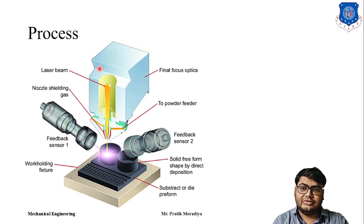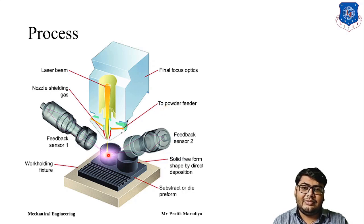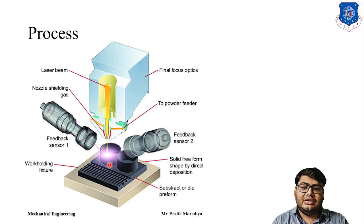This is the diagram of the DMD process. A CO2 laser beam is focused on the part you want to build. The powder feeder supplies the powder, similar to the case of LENS, and shielding gas is also inserted from the nozzle itself — that part is also very similar to LENS.